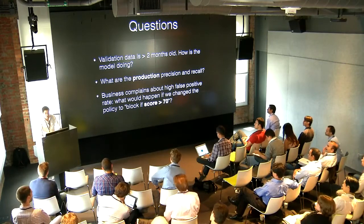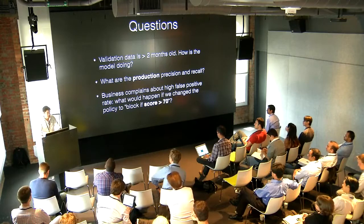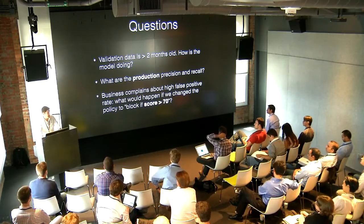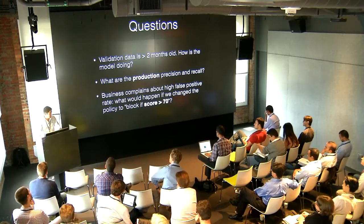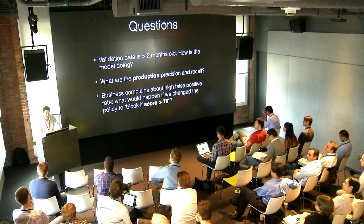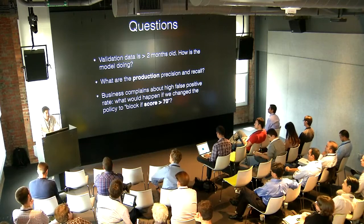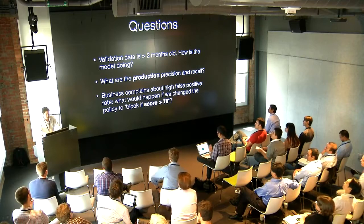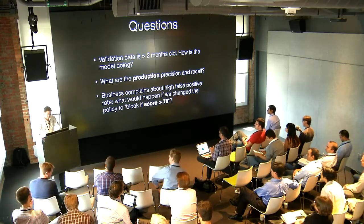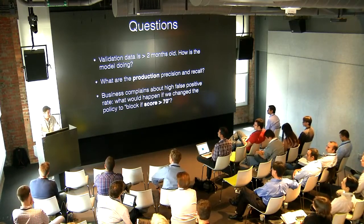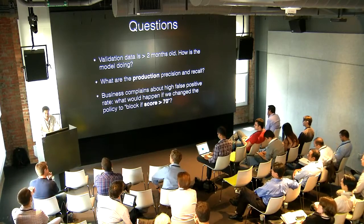Another question: if one of our top businesses says we're getting too many complaints from customers that their cards aren't going through, your false positive rate is too high — we need to ease back. We could say, block if score is above 70 instead of 50. What are the precision and recall of that strategy? Why are these questions not obvious? Because we block these charges, and if we block them, we can't observe the outcome. We can't see if the charge ends up being disputed.